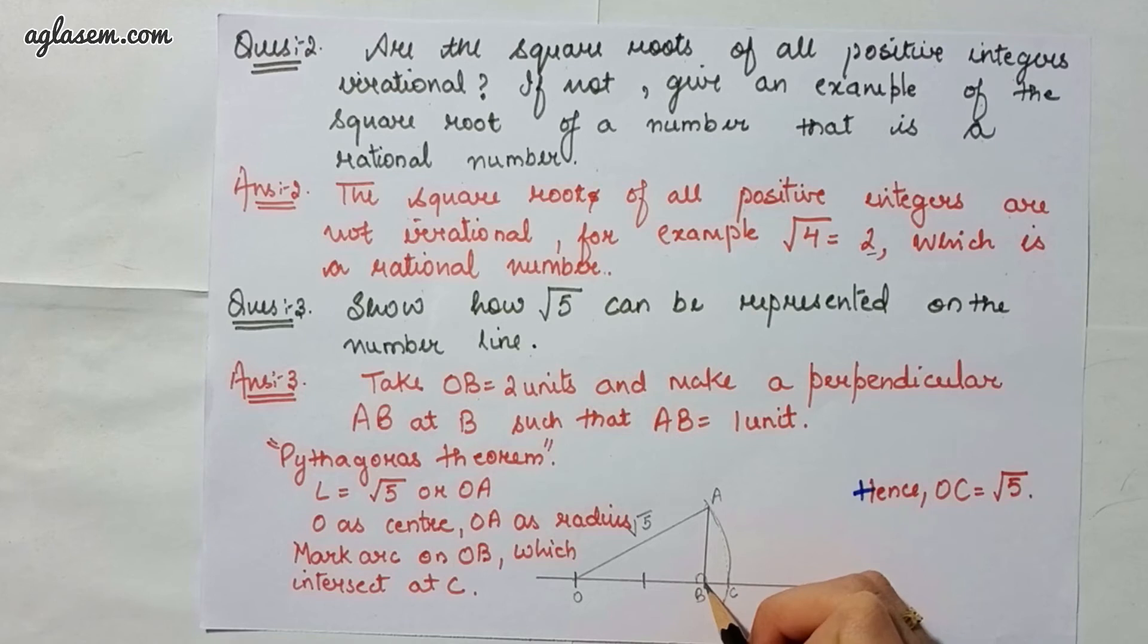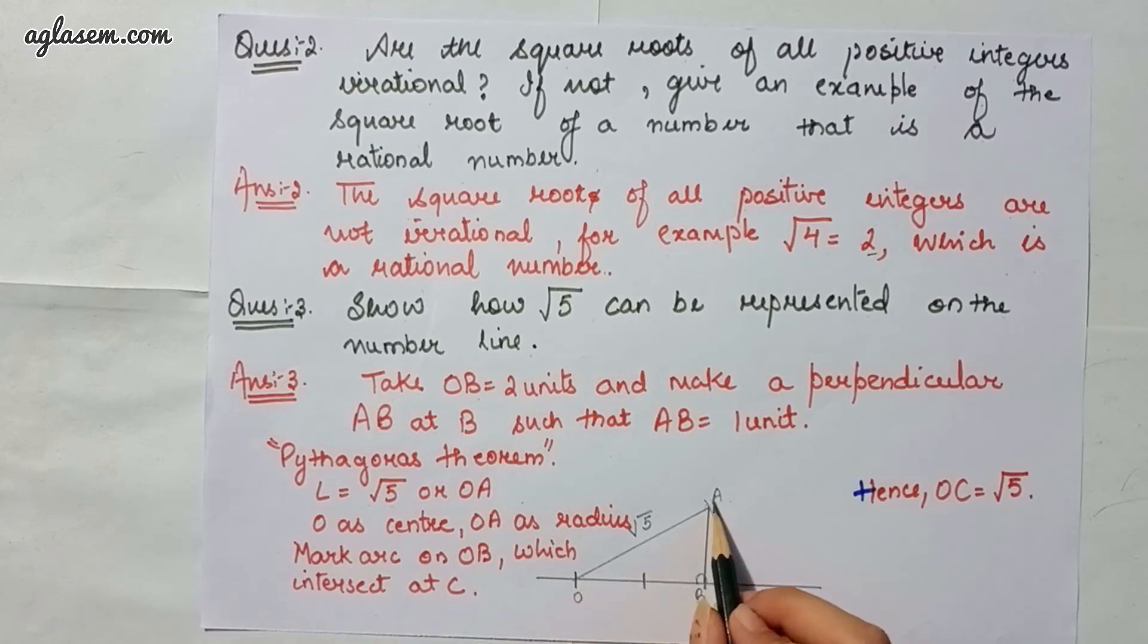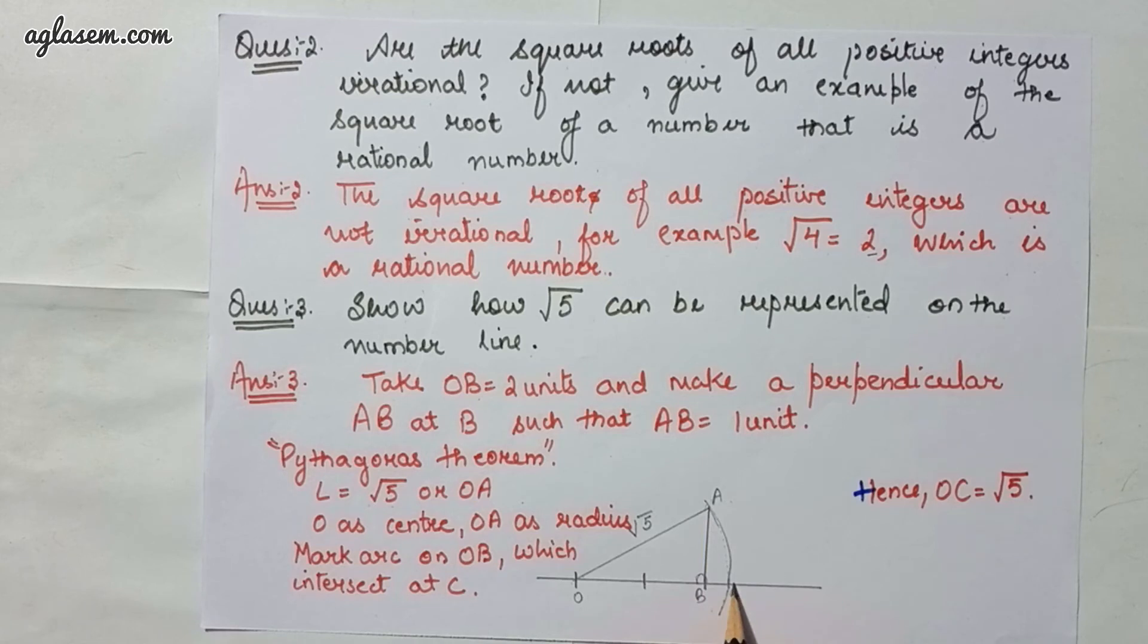Now applying Pythagoras theorem, OA equals root 5. With O as center and OA as radius, mark an arc on OB which intersects at C. Hence OC equals root 5.